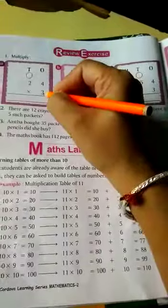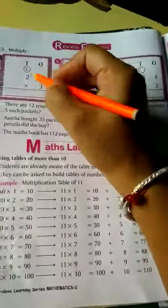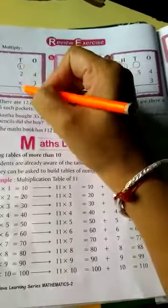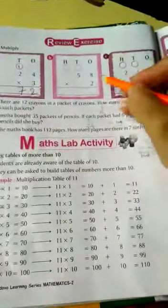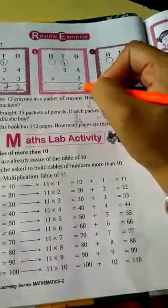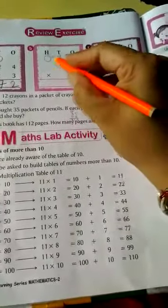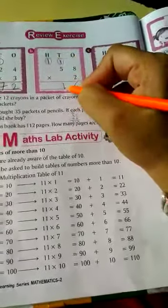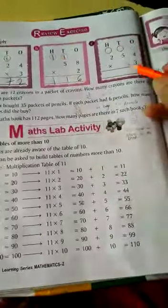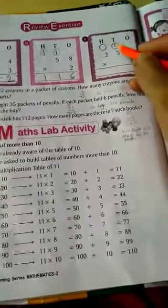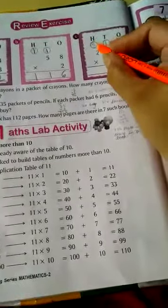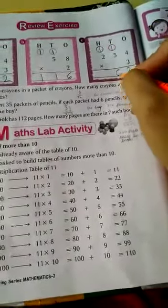Now I am turning page. I am showing you review exercise also. 4 threes are 12. 3 twos are 6 plus 1 equals 7. Now 8 twos are 16, so 1, 6, 16. 5 twos are 10, 10 plus 1 equals 11. So I am writing 11 here and this one will remain here. Now 4 threes are 12, 5 threes are 15.